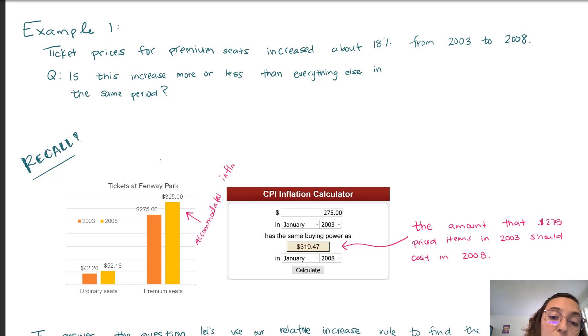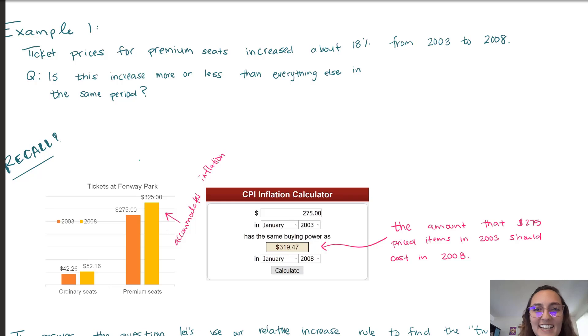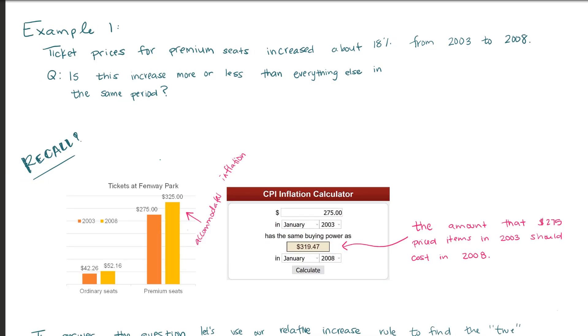Now, something that we don't get to see in the graph is that this increase accommodates for inflation. So what we want to see is what is that true increase? Because the seats may have been worth $325 in 2008 or not, but no matter what, after years, the ticket prices should increase due to inflation. We're going to explore this to be able to answer the question of, is the increase that occurred on the premium seats going to be more or less than the increase of price to other items in the same time period.